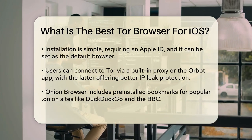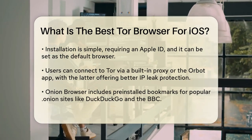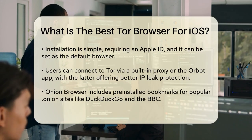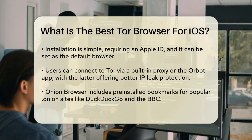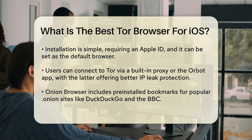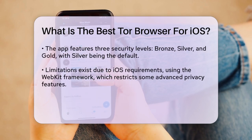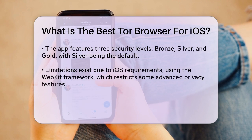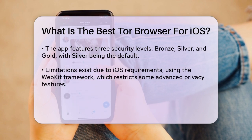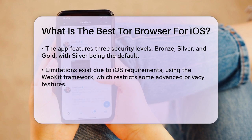Onion Browser comes with several pre-installed bookmarks for popular .onion sites like DuckDuckGo, the New York Times, and the BBC, making it easy to get started with browsing on the Tor network. The app also offers three configurable security levels — bronze, silver, and gold — similar to the safe, safer, and safest levels in the regular Tor browser. The silver level is the default and works well for most everyday browsing tasks.